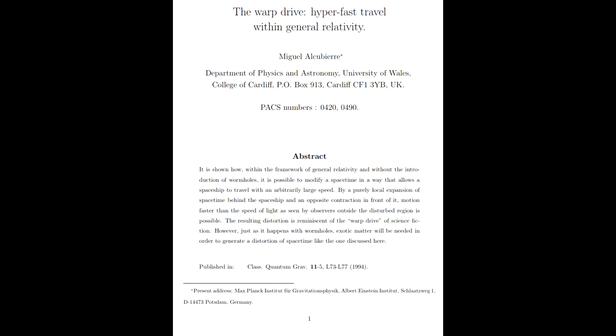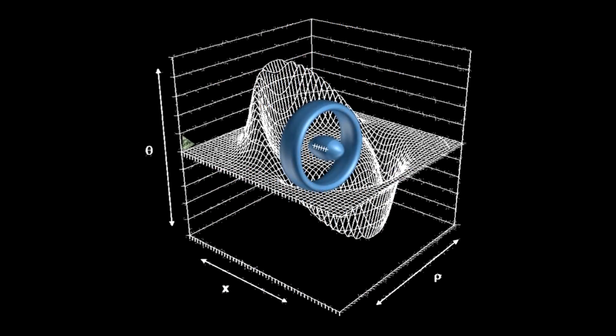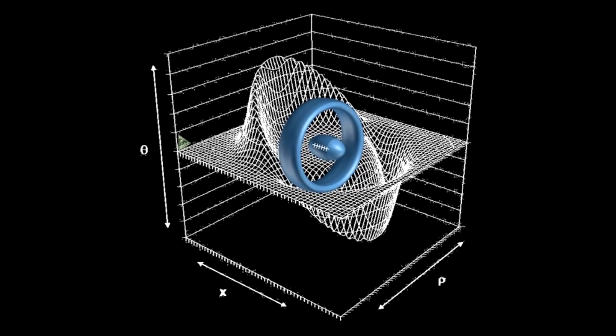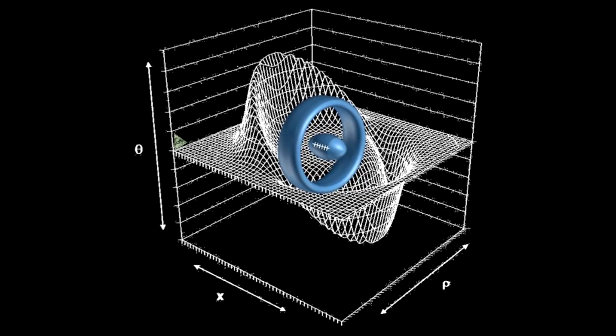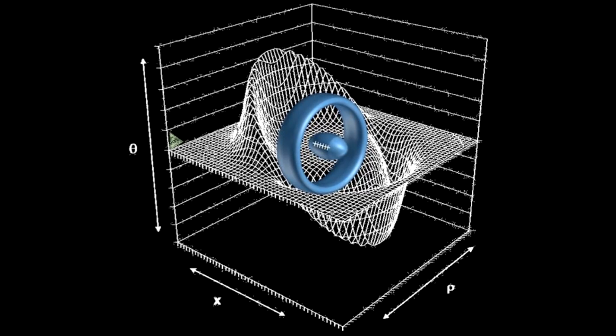And in May 1994, he released a paper titled The Warp Drive, Hyperfast Travel Within General Relativity, in which he constructed a warp field within the mathematical language of Einstein's relativity, which would allow you to move faster than the speed of light.